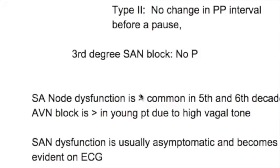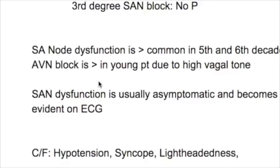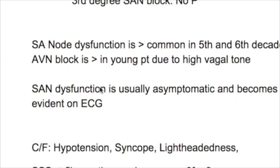SA node dysfunction is more common in the 5th and 6th decade and is usually asymptomatic. The AV node block is more common in young patients, and it is due to high vagal tone as occurs in athletes. SA node dysfunction is usually asymptomatic and becomes evident on ECG.